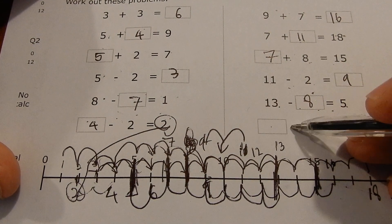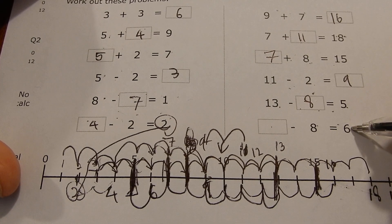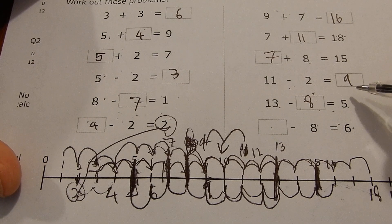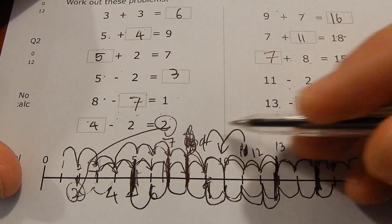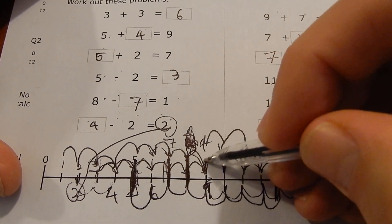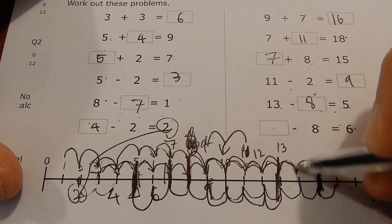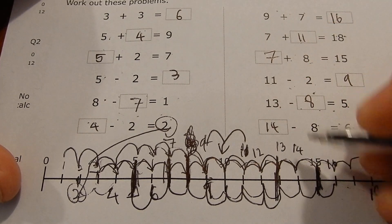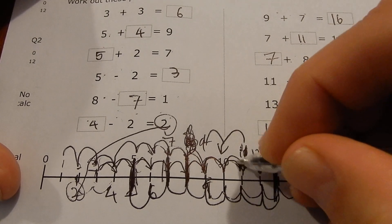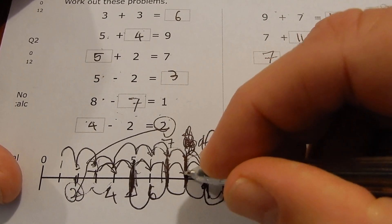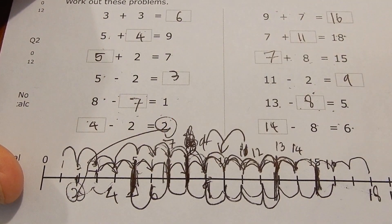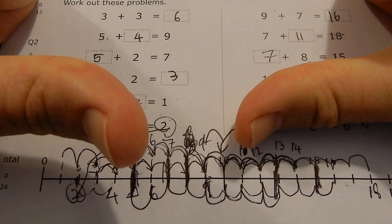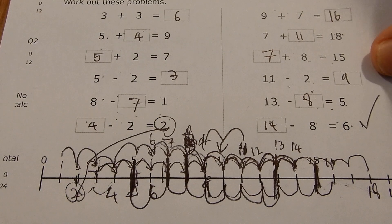Something take away eight equals six. Find eight, then add six to it: one, two, three, four, five, six — it's 14. Let's check: 14 take away eight — one, two, three, four, five, six, seven, eight — gets me to six. Yes, there's six, next to seven. Counting on and back.